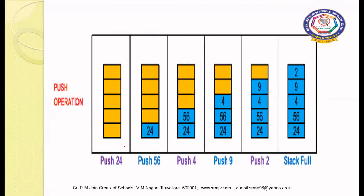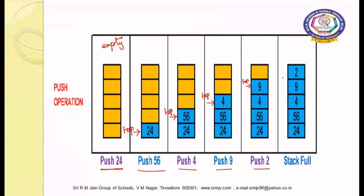Here is a step-by-step example. Initially the stack is empty. We push elements one by one: first 24 is inserted, with top pointing to it. Then we push 56, and top shifts to 56. Then push 4, push 9, and push 2 — top now points to 2. We have five elements total in the stack, and the stack is now full. No more elements can be inserted.